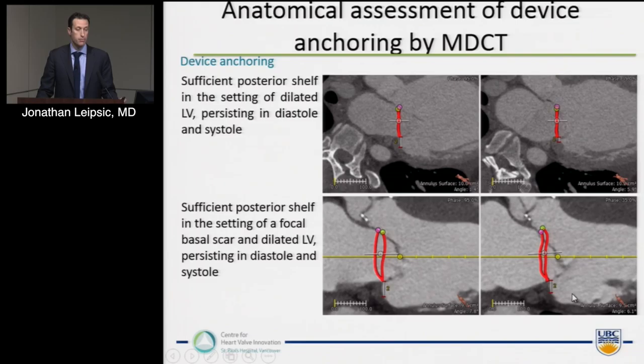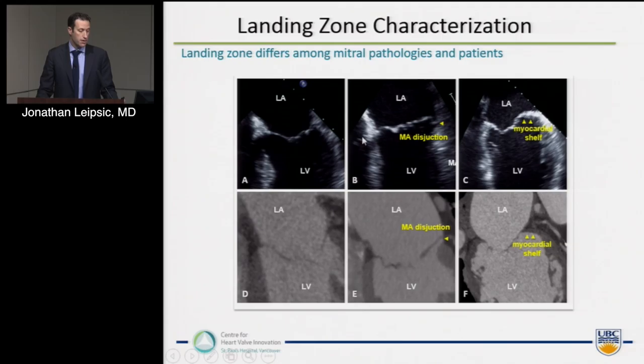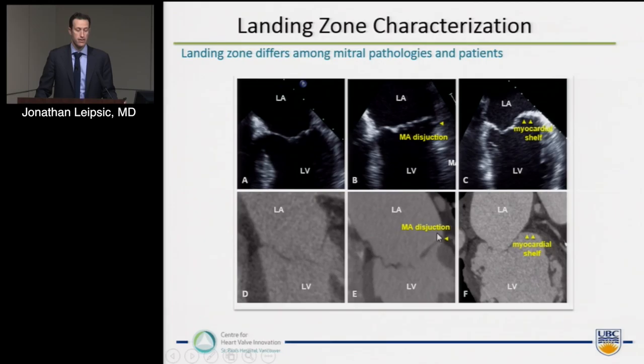We can identify this posterior shelf not just in diastole but also in systole. In the case of a mature circumflex territory infarct, you can see the remodeling, thinning in the inferolateral wall, and a large posterior shelf preserved in systole as well — a good landing zone for a Neovast or Tiara device. We can also characterize the landing zone beyond the posterior shelf. We can identify mitral annular disjunction, which when I first identified on CT a few years ago I was very excited — I thought I'd discovered something, then found it was published in the New England Journal in 1987. I was late only by 28 years — a rounding error.